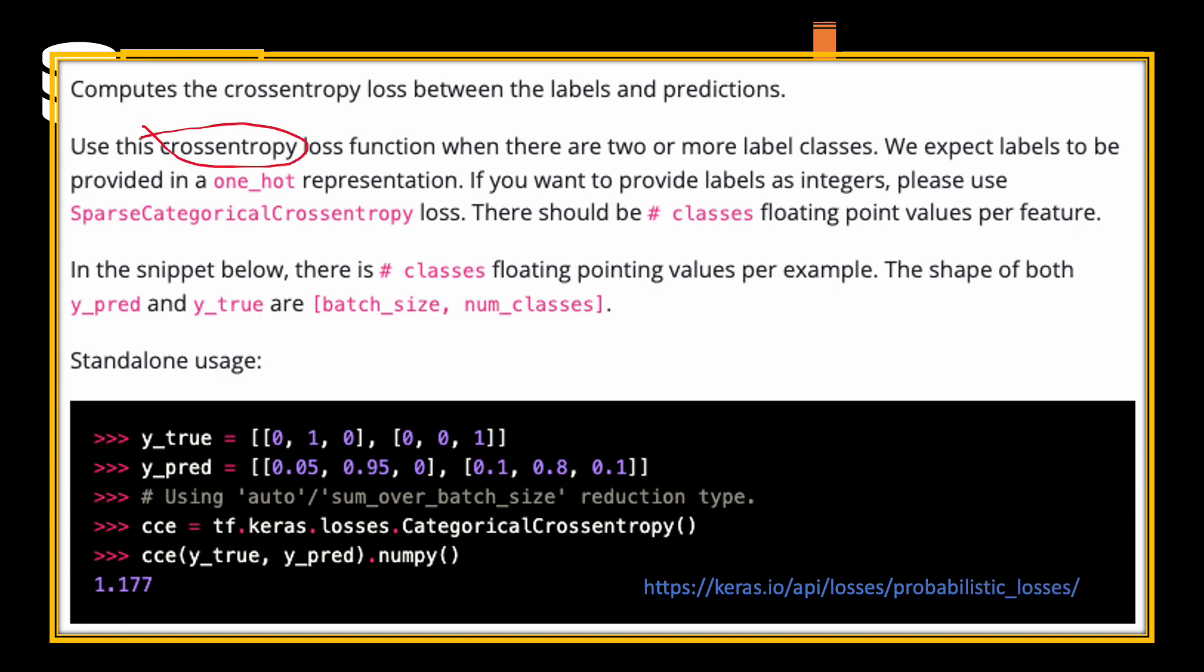Here is one loss function called categorical cross entropy that can be used. This is a screenshot from Keras documentation. Note that it also talks about the one hot representation for the ground truth labels. As I mentioned earlier, in my humble opinion, it is not an ideal way to think in this direction of one hot vector, but you must know about it as this is a widely used term in this context.